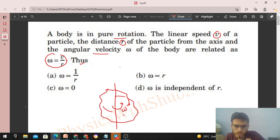If we take any particle on this body and study its angular velocity, then omega—the angular velocity—will be the same for each particle on this body. Any particle at any distance r will have the same omega.